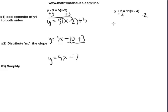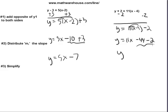So we end up with y equals 11 times x minus 4, minus 2. Distribute the slope. So you end up with y equals 11x. 11 times minus 4 is going to give us minus 44, minus 2. Simplify, and you end up with y equals 11x minus 46.